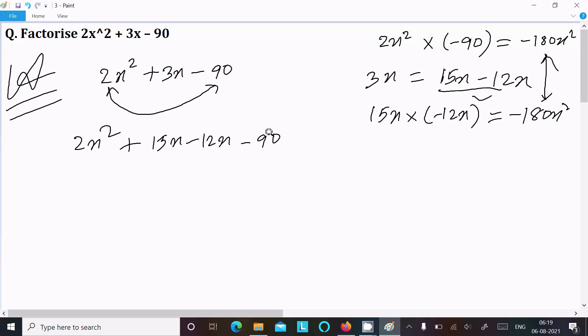Next, let's take the common. From the first two terms, take x common: x(2x + 15).